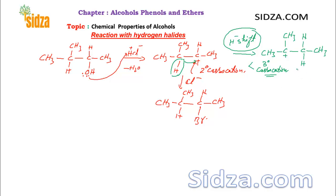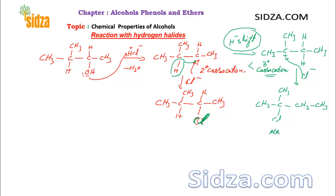When the nucleophile Cl⁻ attacks the tertiary carbocation, you get a different chloro product — CH₃C(Cl)(CH₃)CH₂CH₃. So you get two types of products. The product from the tertiary carbocation is the major product, and the one from the secondary carbocation is the minor product, because both secondary and tertiary carbocations are present in the reaction mixture.